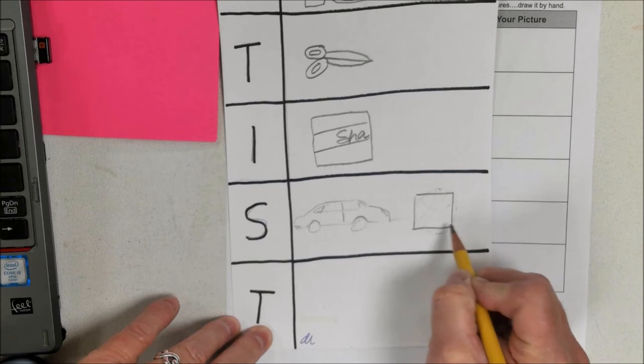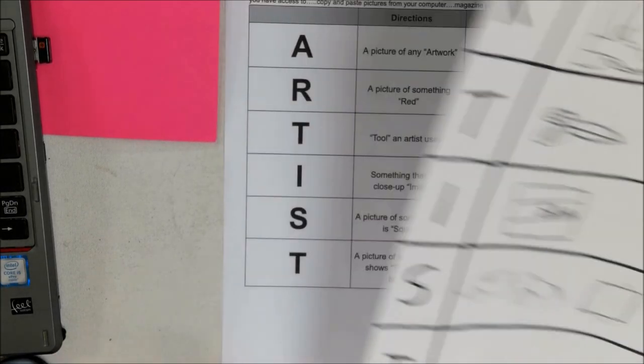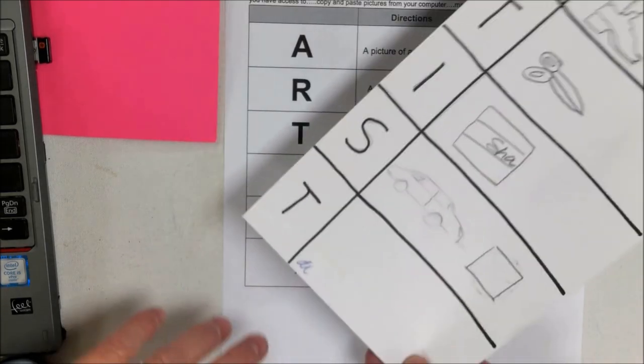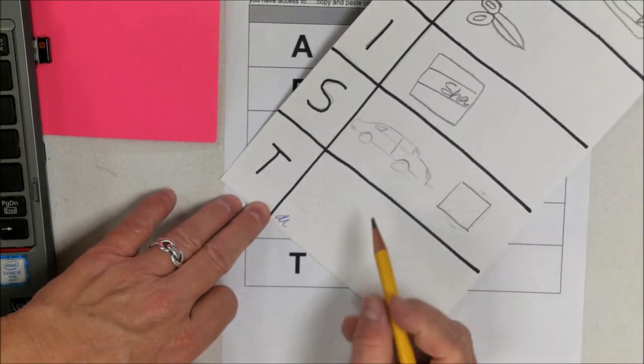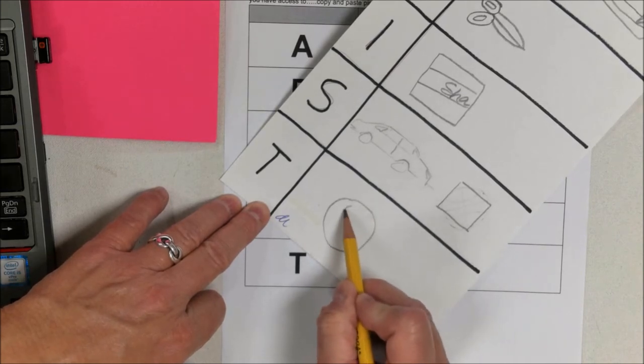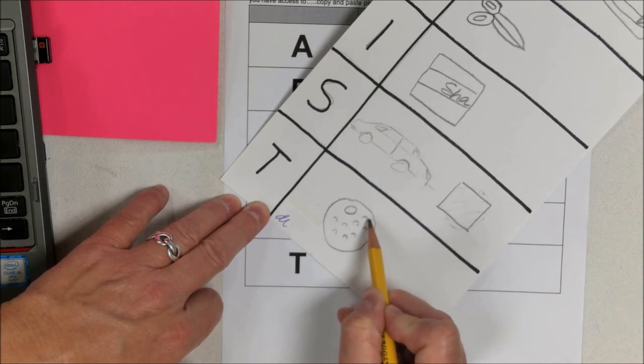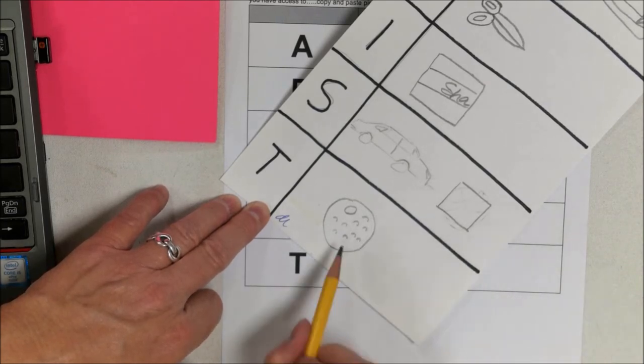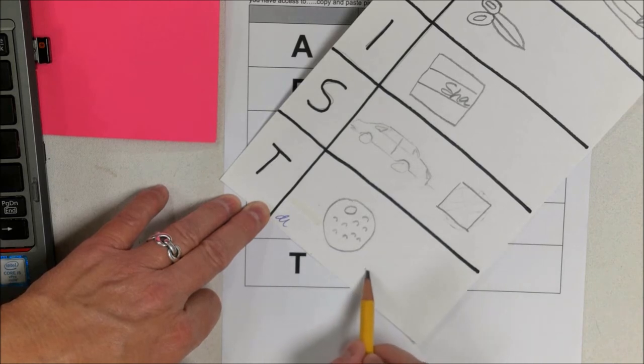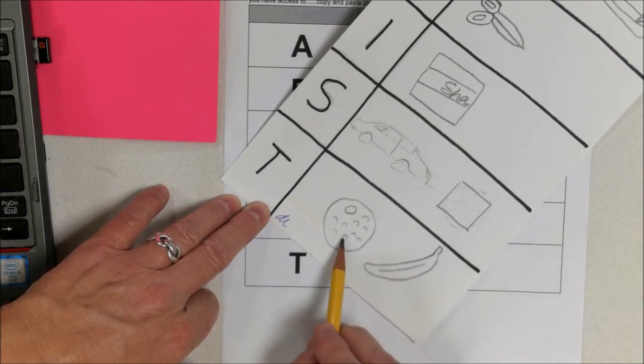And then T is something that shows texture. Texture is hard to draw, so I'm going to tell you that right now. I'm going to draw an orange because an orange has little bumps on it. Little bumps show texture, it's how something feels. This would be bumpy. A banana would be smooth. So if I draw a banana, this part is smooth, the orange is bumpy, so that shows texture.